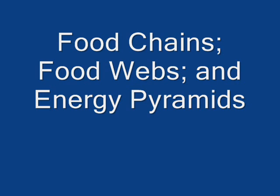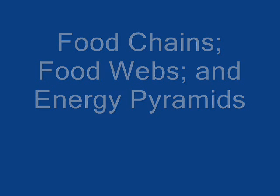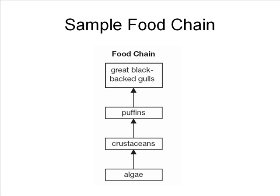Next, let's look at how energy moves through a food chain. In a food chain, the bottom level is always a producer — an organism that can make their own food, usually through photosynthesis. Producers are also sometimes called autotrophs. Producers are eaten by what are called primary consumers, which are typically herbivores. The primary consumers are then eaten by the secondary consumers, and the secondary consumers are then consumed by the tertiary consumers.